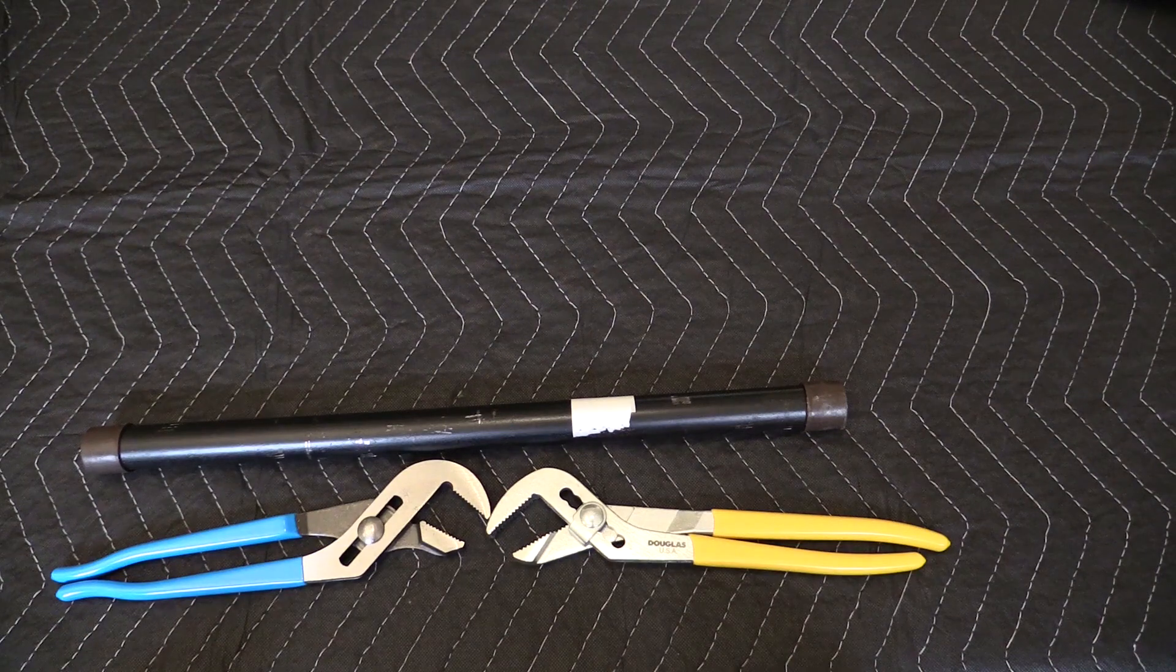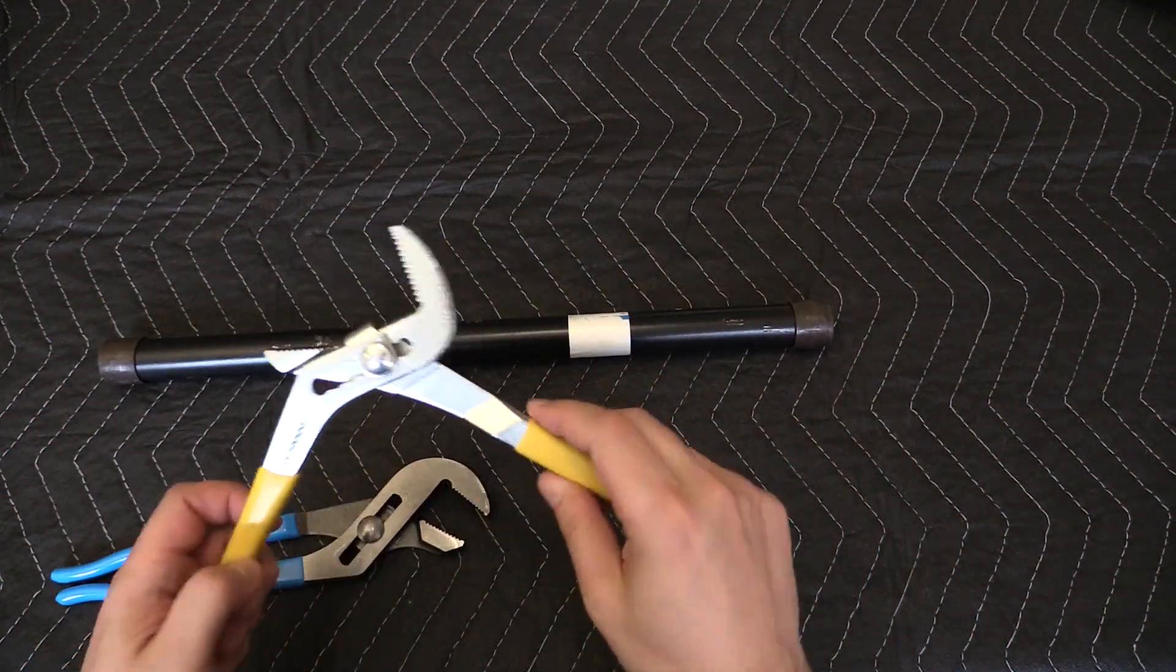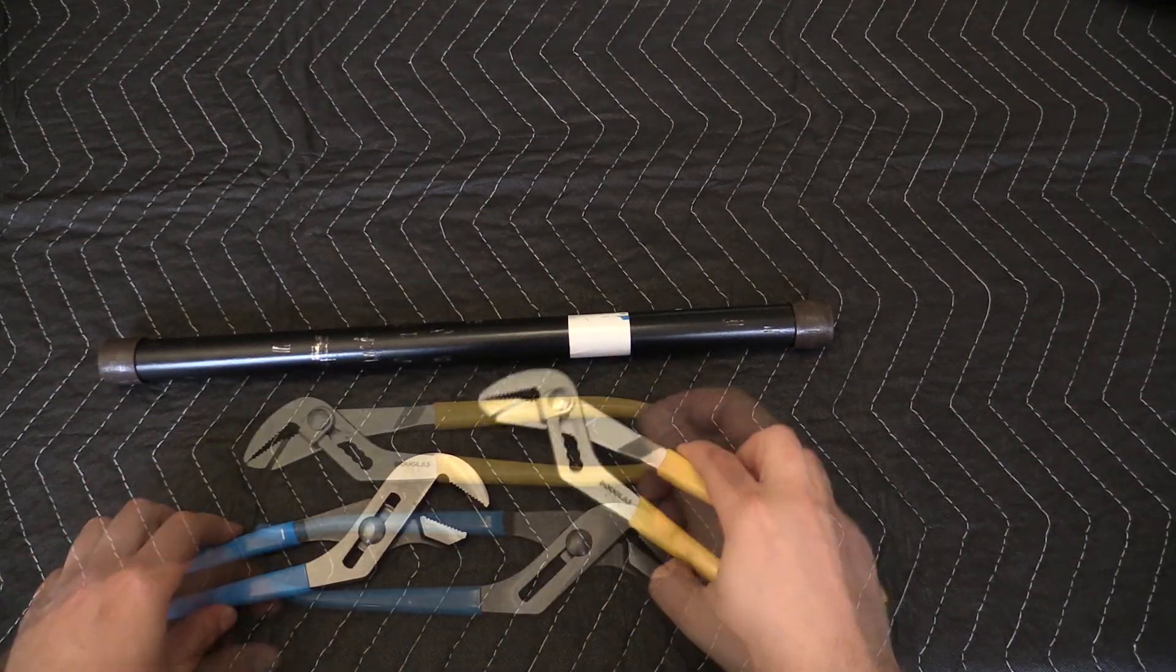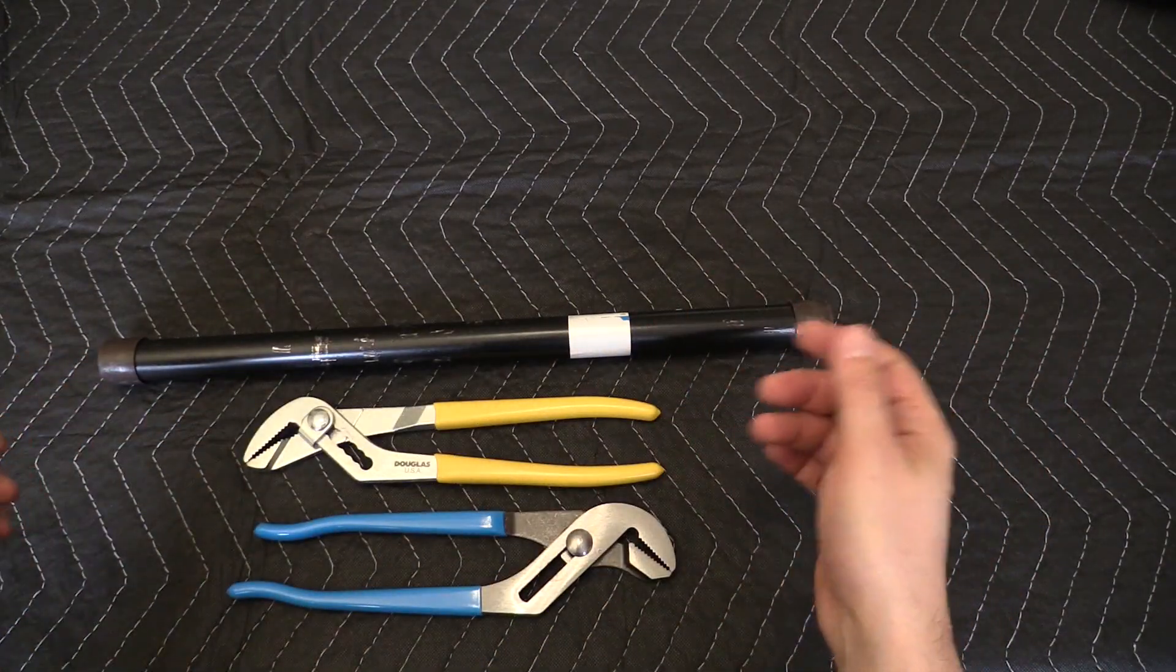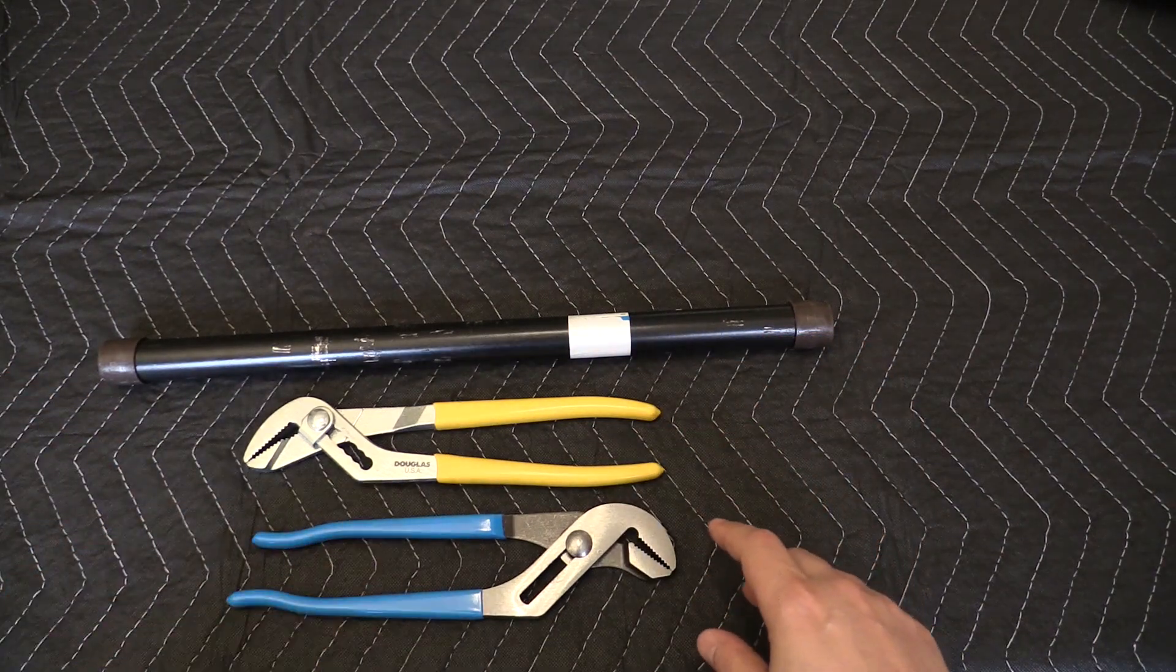So for my money I'd rather take the channel locks, but the Douglas pliers have their own interesting features that might work better for somebody. That's my review on these two pliers, let me know what you think in the comments, let me know which one you prefer and thanks for watching.